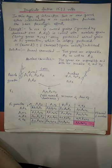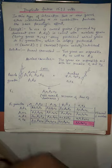In this type of interaction, two or more genes, either individually or in combination, produce the same phenotypic effect. This means there are two genes which duplicately act with each other and produce the same phenotypic effect. For example,